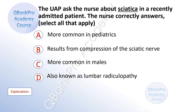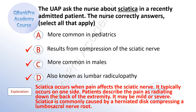The UAP asked the nurse about sciatica in a recently admitted patient. The nurse correctly answers. Select all that apply. A. More common in pediatrics. B. Results from compression of the sciatic nerve. C. More common in males. D. Also known as lumbar radiculopathy. The correct answers are B, C, and D. Sciatica occurs when pain affects the sciatic nerve. It typically occurs on one side, and patients describe the pain as radiating down the back of the extremity. Sciatica is commonly caused by a herniated disc compressing a lumbosacral nerve root.